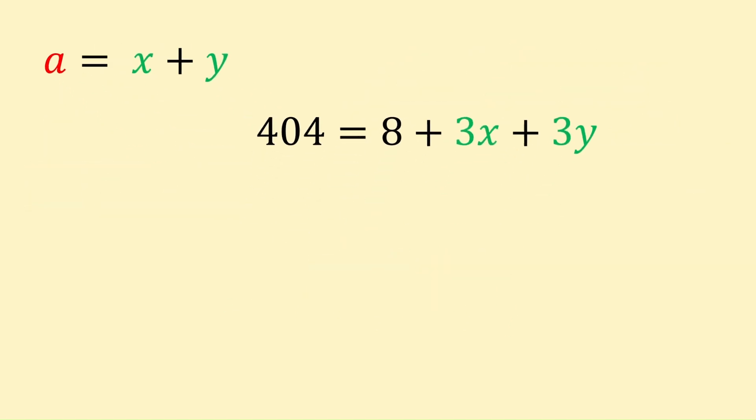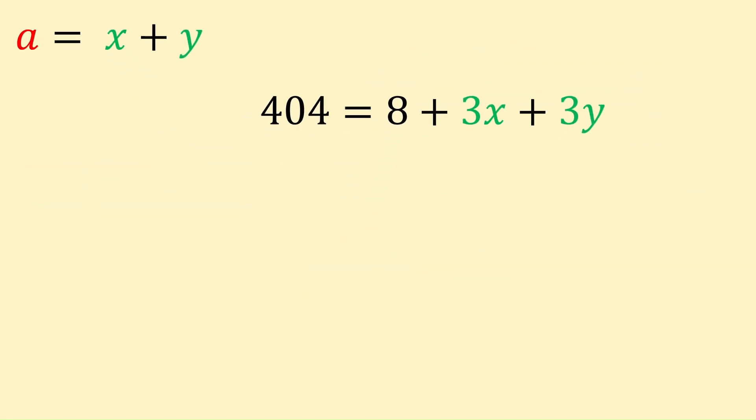Let's crack them down to find A. If we subtract 8 from both sides of our second equation, we get 396 is equal to 3x plus 3y. We can simplify this further by dividing both sides by 3 to get 132 is equal to x plus y.